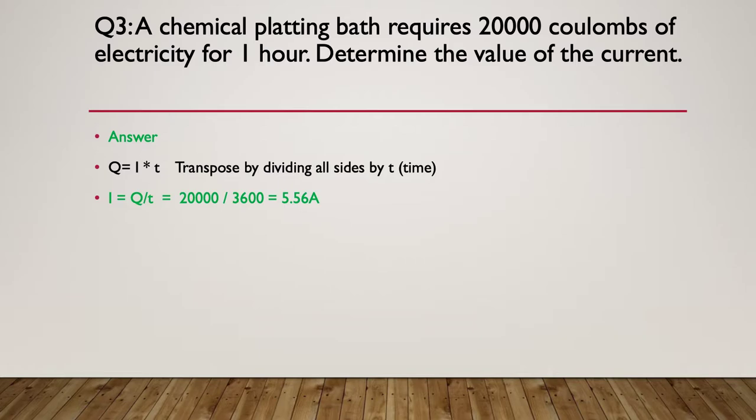And now let's move on to the answer. So the answer is Q equals I multiplied by T. So we transpose the equation by dividing both sides by time, giving us the final equation of I equals Q divided by T. So we take our 20,000, we divide it by 3600, because we were running for one hour and there are 3600 seconds. So that works out that we would need to provide 5.56 amps for that one hour to produce our 20,000 coulombs.